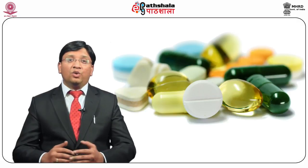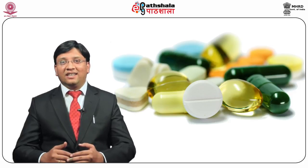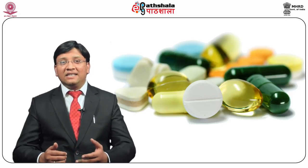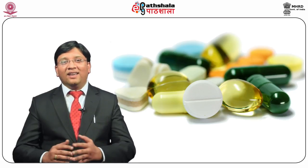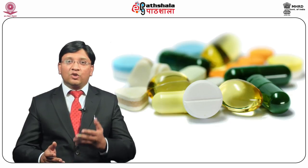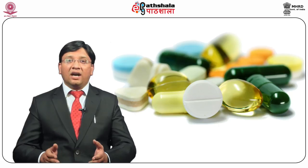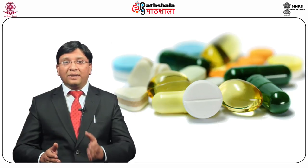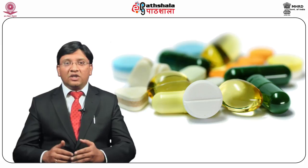Biphasic liquid dosage forms essentially consist of two phases, and based on these phases they are classified as either suspension or emulsion. If one phase is solid and the other phase is liquid in which the solid is insoluble, the biphasic dosage form is called a suspension. However, if both phases are liquid and immiscible with each other, the biphasic dosage form is known as an emulsion.